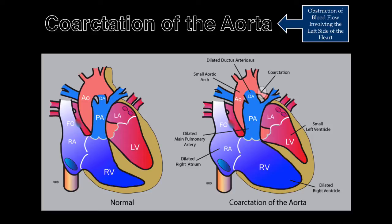A constriction can occur either pre-ductal or post-ductal. Coarctation has been associated with additional cardiac defects including bicuspid aortic valve, aortic stenosis or insufficiency, transposition of the great arteries, ventricular septal defects, double outlet right ventricle, and truncus arteriosus.